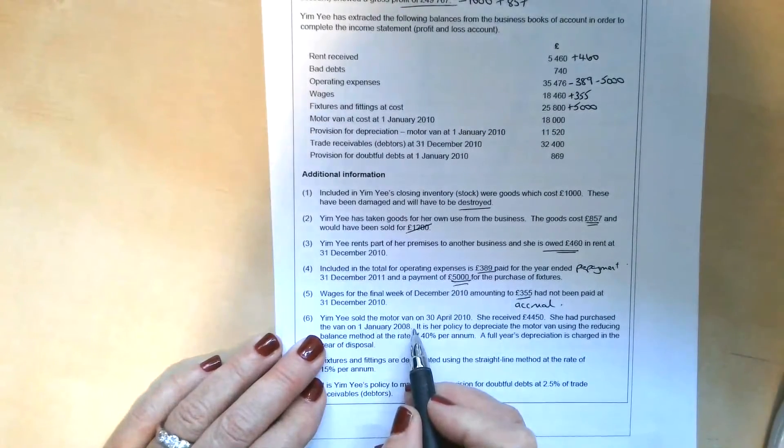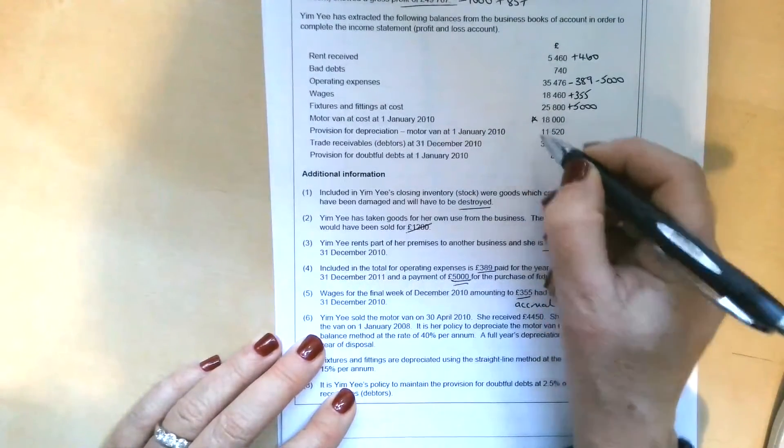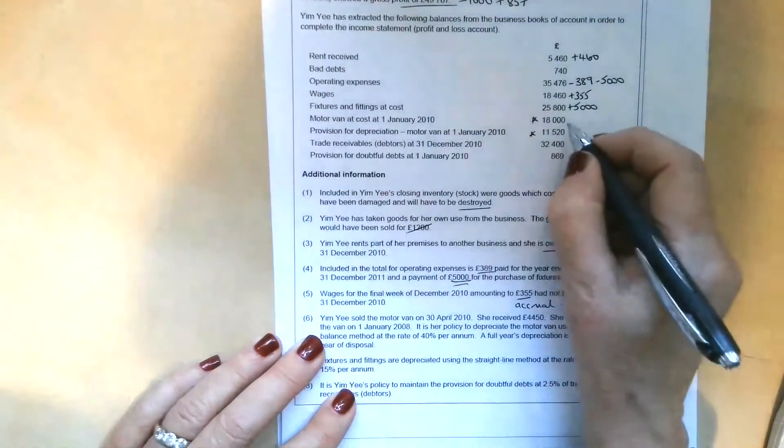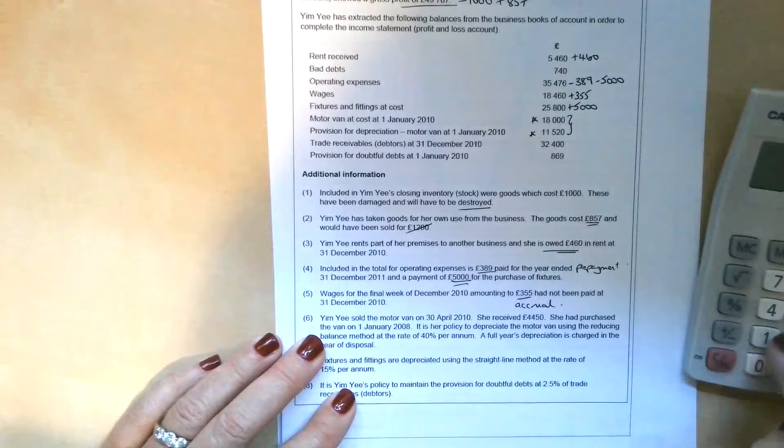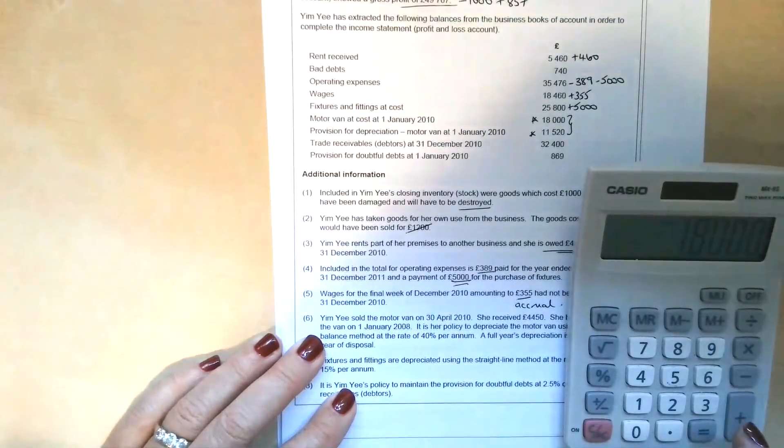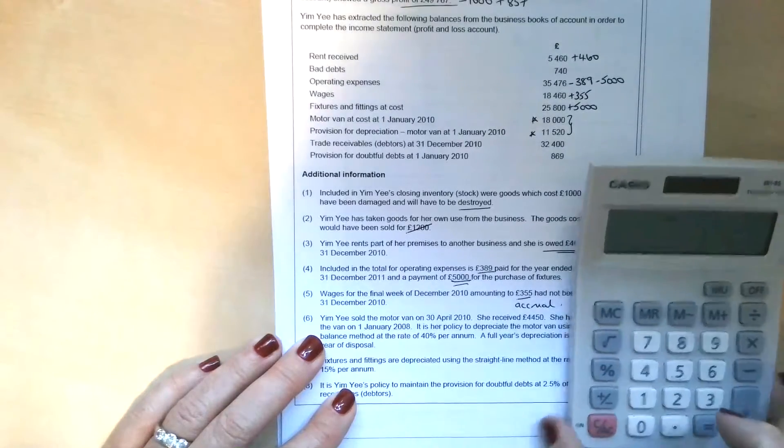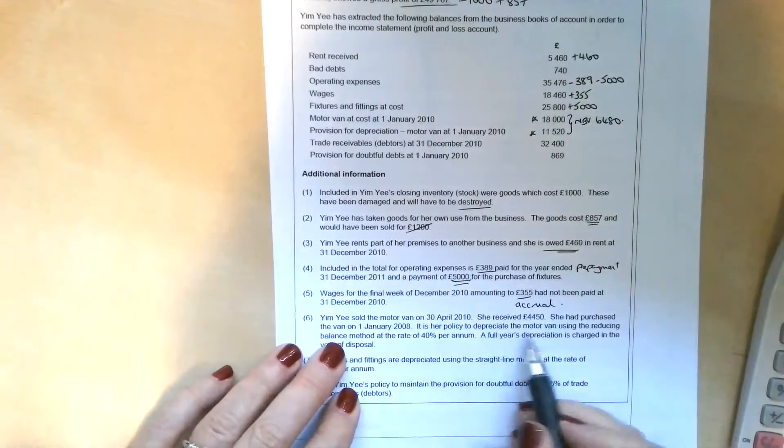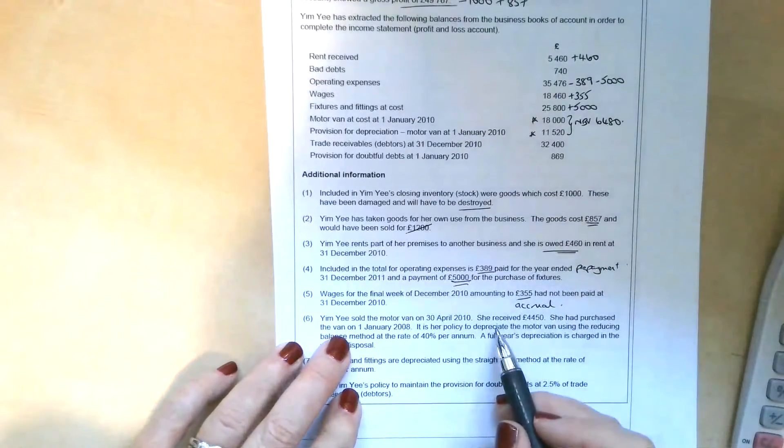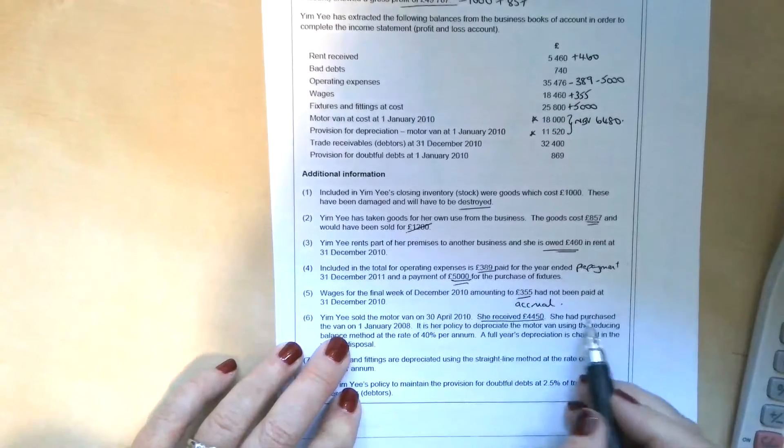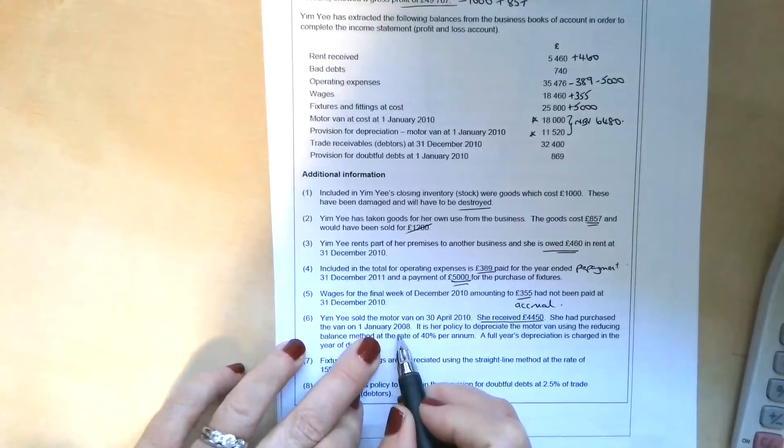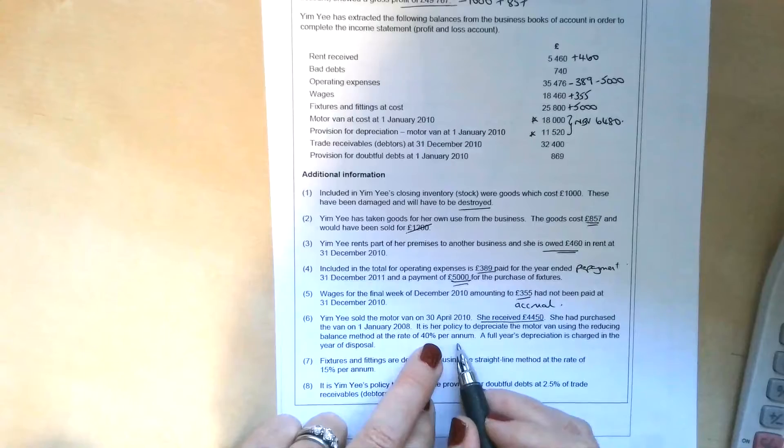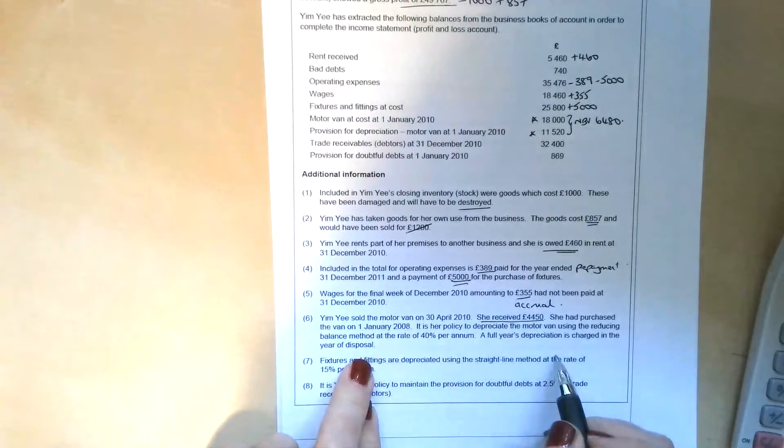Yim Yi sold the motor van on the 30th of April 2010. So this motor van here, which had a cost of £18,000, that was the original cost and depreciation to date of £11,520 has been sold. So we need to find out what the net book value is. So we just take the £18,000 and deduct the £11,520. The net book value is £6,480. She sold it, that's what it was brought forward. She's received £4,450. So that's the sale proceeds. But it said she'd purchased the van on the 1st of January 2008.